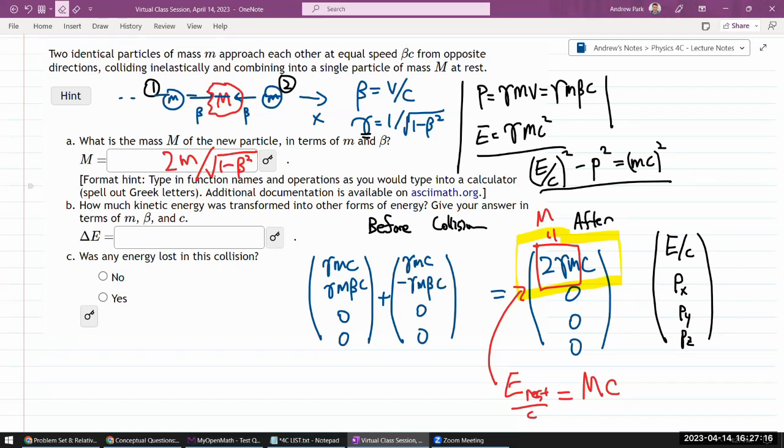So the way I would look at it is, in this before collision, if we are looking at the total energy, which would be 2 gamma MC squared, that could have been thought of as sum of the rest energy 2 MC squared for the two particles plus the kinetic energy. And so this kinetic energy, all of it got transformed, became part of this.